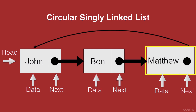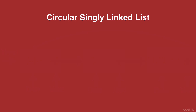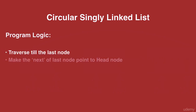This connection is in a circular order — from the head node you have a connection all the way to the last node, and from the last node you have a connection back to the head node, hence the name circular linked list. The program logic: we first need to traverse the list till the last node, and then from the next of the last node, we establish a connection to the head node. Let's write a Python program for this right away.